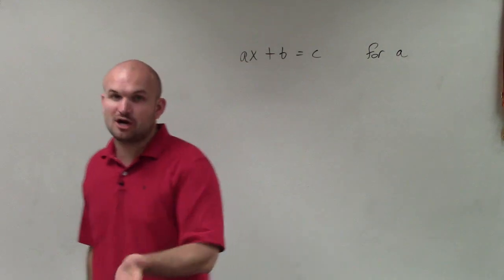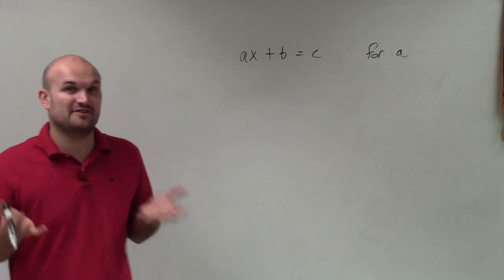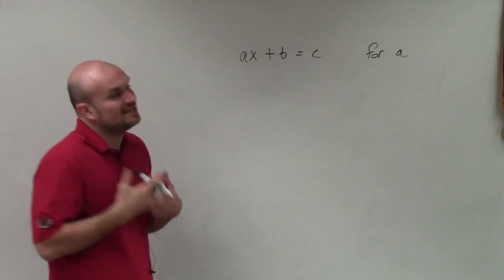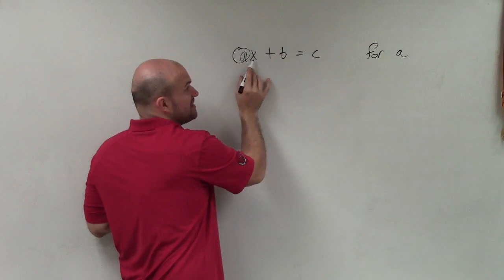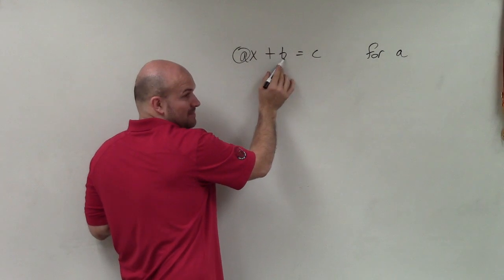So again, what we want to do when solving for a is isolate the variable, get the variable by itself. To do that, we need to look at what is happening to my variable a. Well, you can see a is being multiplied by x and is being added by b.